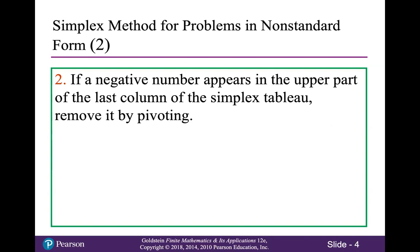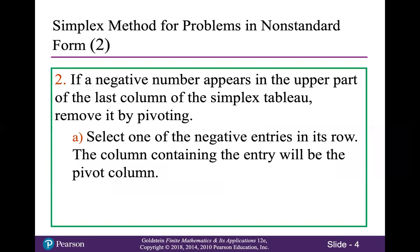By multiplying those other inequalities on both sides by negative 1, you get a linear polynomial less than or equal to a constant, where the constant can now be negative. If a negative number appears in the upper part of the last column of the simplex tableau, which it generally will after you've done the previous step, we're going to remove it by pivoting. Select one of the negative entries in the row that has the negative number at the end — the column containing this negative entry will be the pivot column. There may be more than one negative entry in that row, and there's no rule on which one to pick.